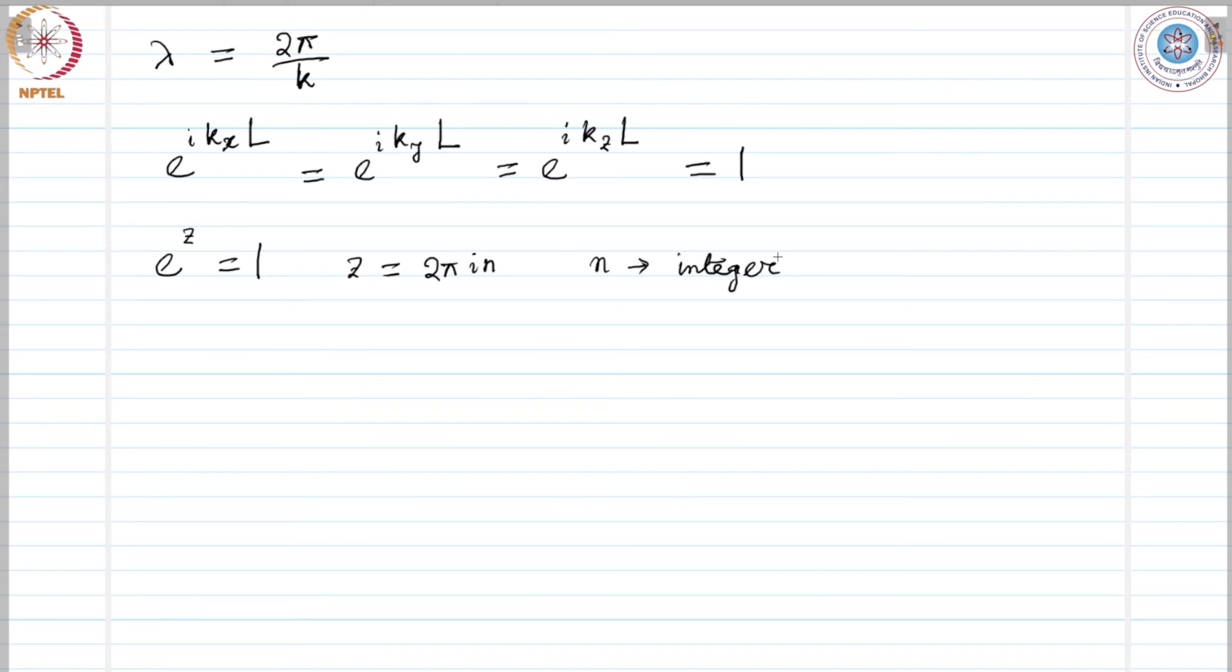The components of k then must take the form k_x = 2πn_x/L, k_y = 2πn_y/L, k_z = 2πn_z/L where n_x, n_y, n_z are integers.